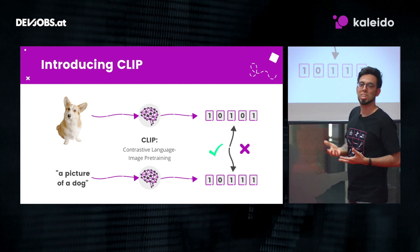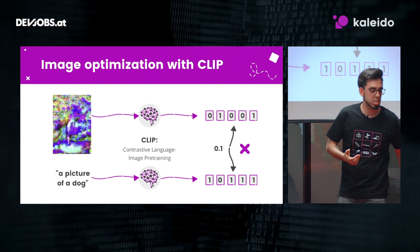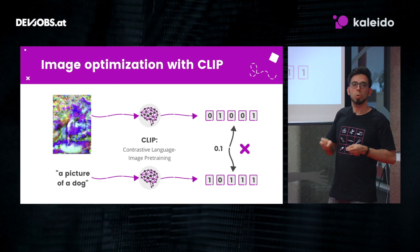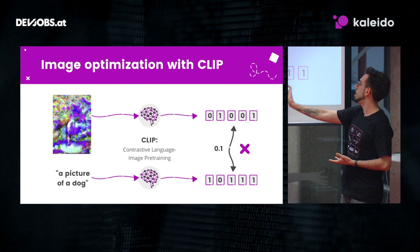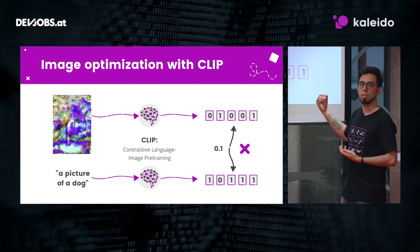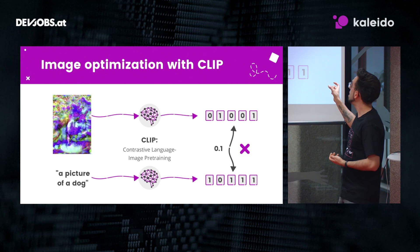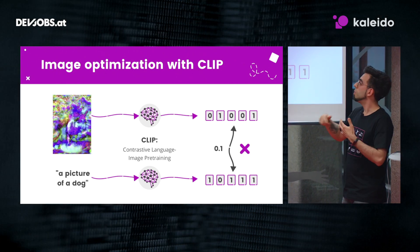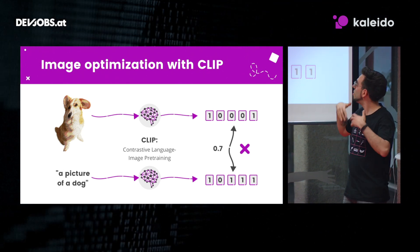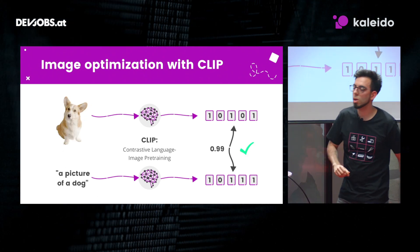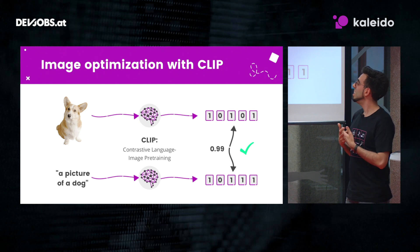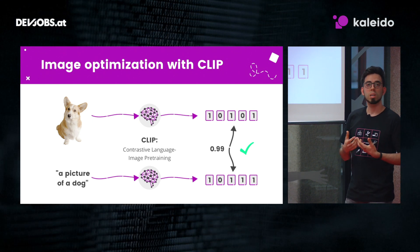This is useful for image generation because with CLIP we can perform image optimization. We start from a random image, say we want a picture of a dog, and we encode both the image and the text 'a picture of a dog' to get their IDs. By comparing them we get feedback on how to change the image so it looks more like a dog. We modify the pixels a little, check again, modify again, and by repeating this process many times we gradually end up with something that looks like a dog — using text to guide image generation.